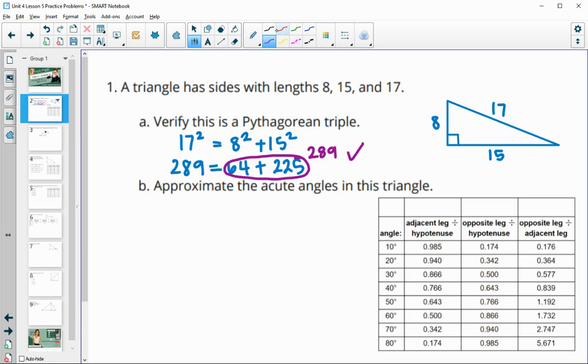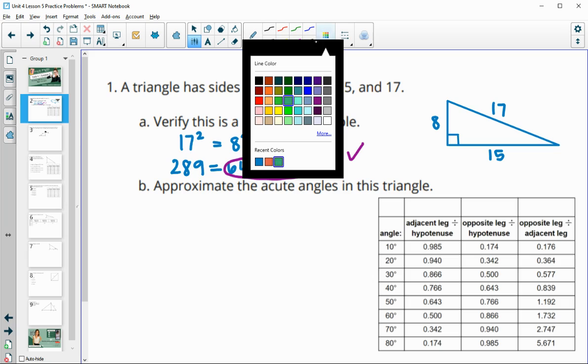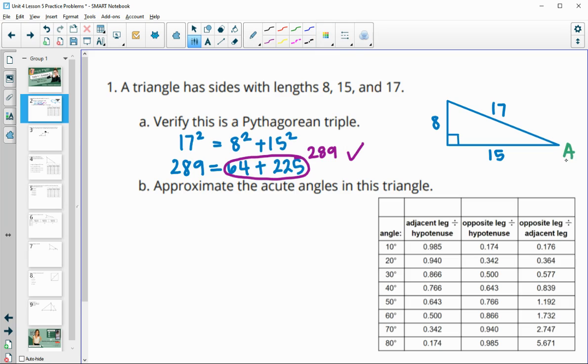I'm just going to name one of the angles here, so I'm going to call this angle A, and I'm going to work on finding the measure of this angle first. So I'm going to label the sides here. You can do whichever two sides you want, and you're going to use your right triangle table. I'm just going to do this first column of adjacent over hypotenuse.